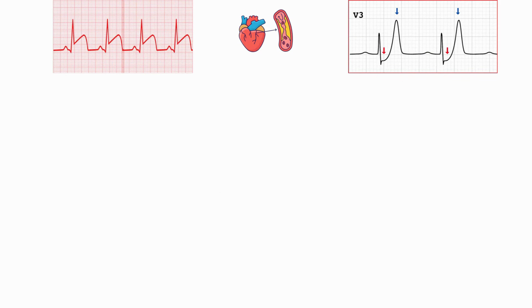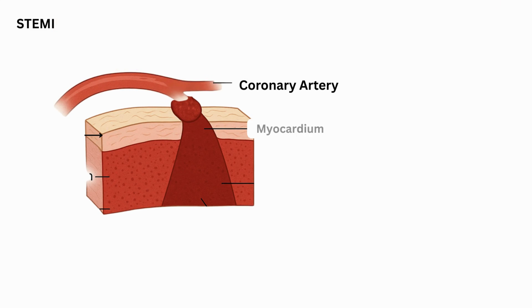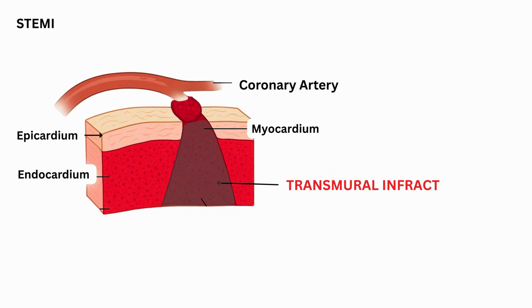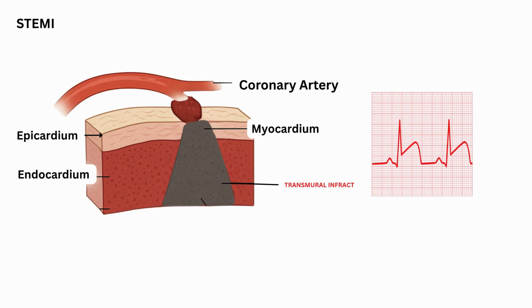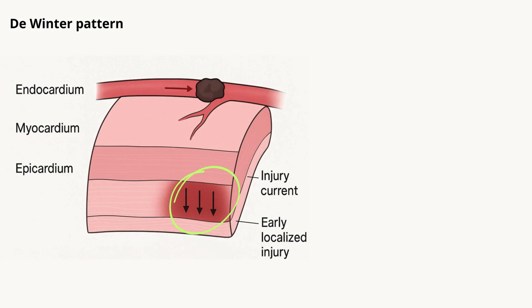According to our current understanding, in the STEMI the damage goes all the way through — from the subendocardium, which is the inner layer of the heart, to the epicardium. That's why we get necrosis and a transmural infarct. What this transmural infarct does is shift the injury current upward, which is why we see ST segment elevation on the ECG.